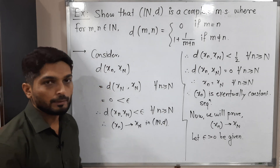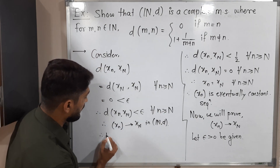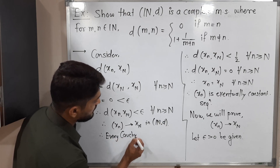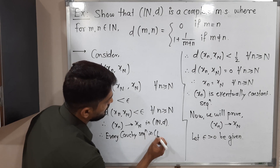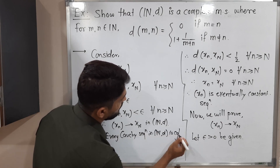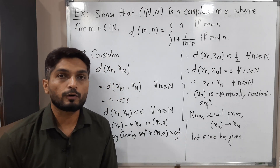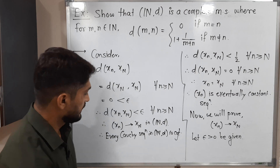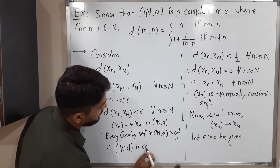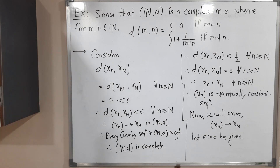We started with any arbitrary Cauchy sequence and proved that it is convergent. Therefore, every Cauchy sequence in (N, D) is convergent. This is the definition of a complete metric space. Therefore, (N, D) is complete. In this way, we have completed this example.